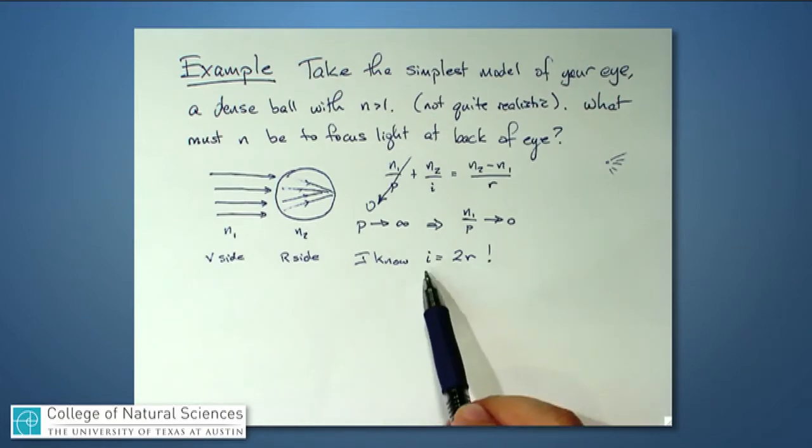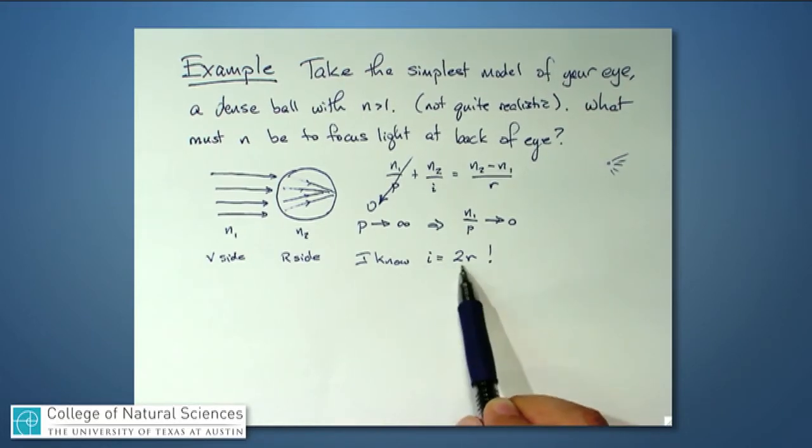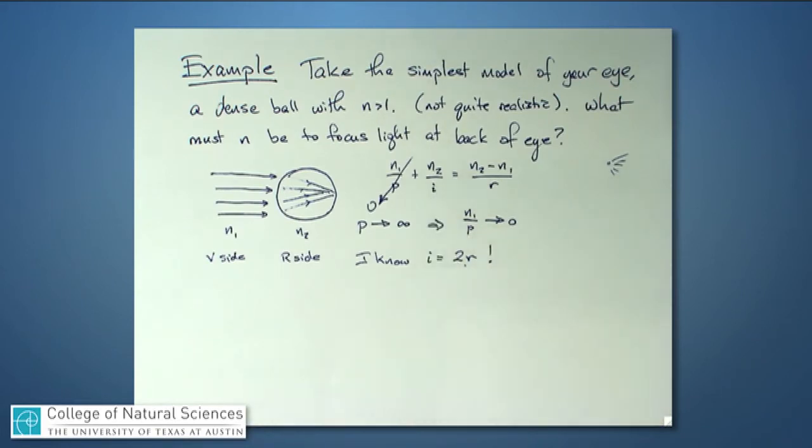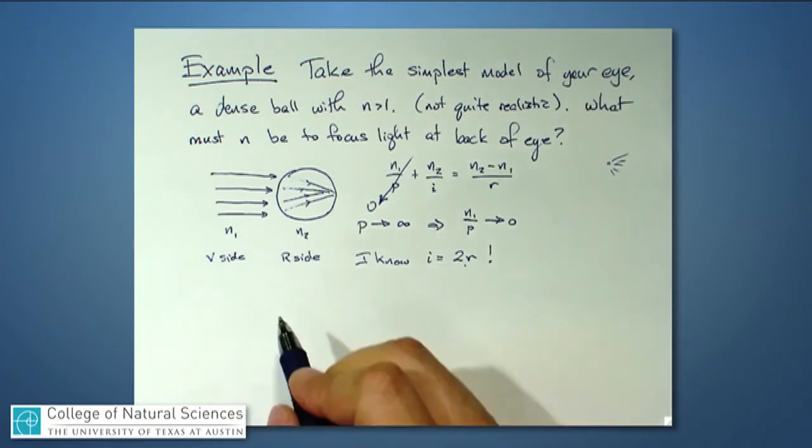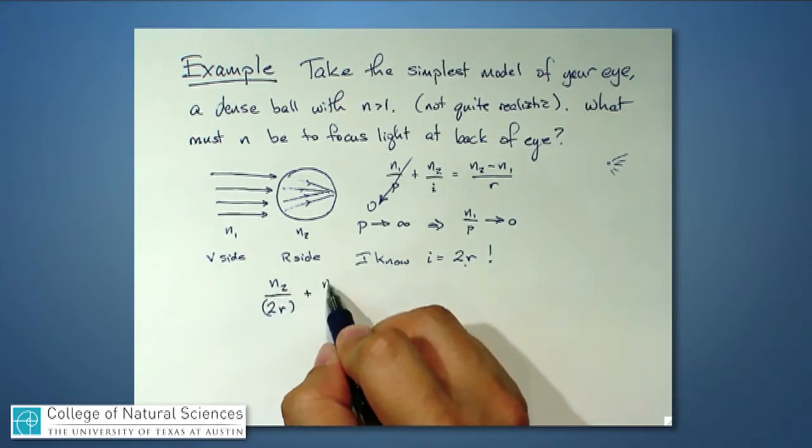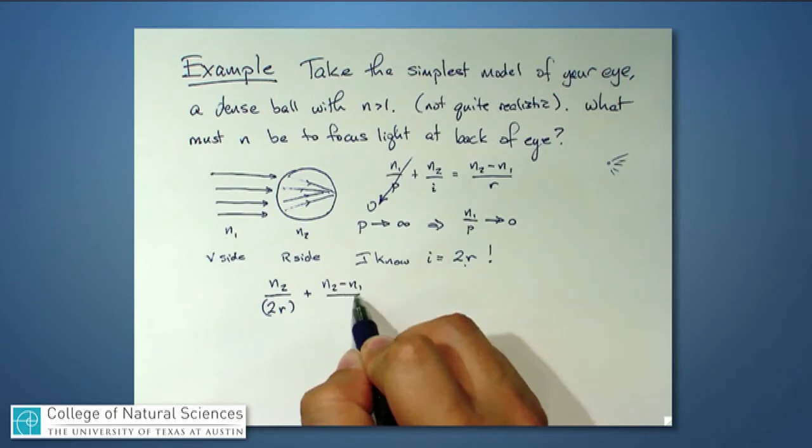So I'm going to take this expression for I is 2R, and I'm going to insert it back in my original expression for relating object distance, image distance, and R radius of curvature. I'm going to say that N2 over 2R equals N2 minus N1 over R.